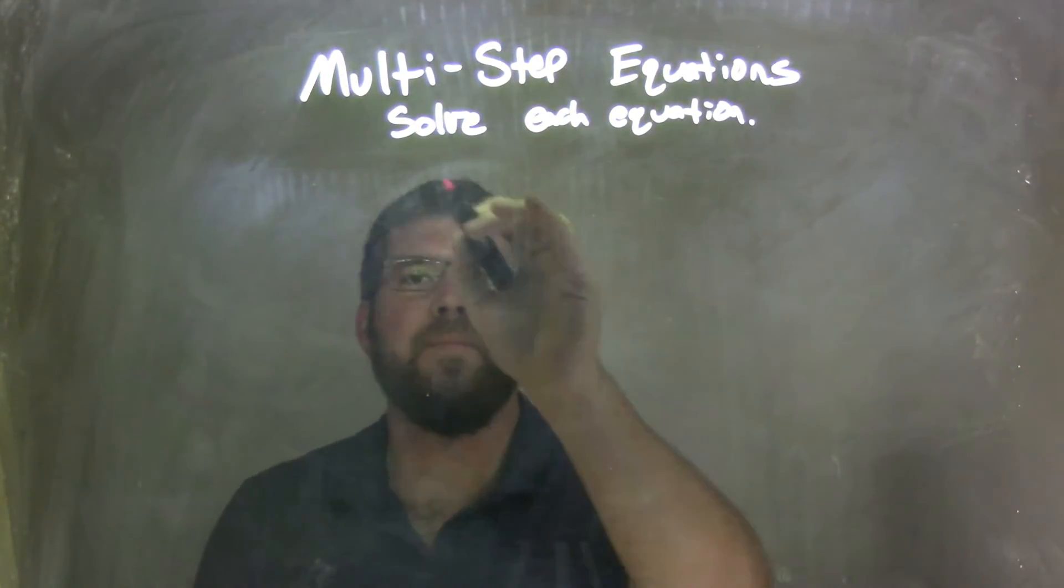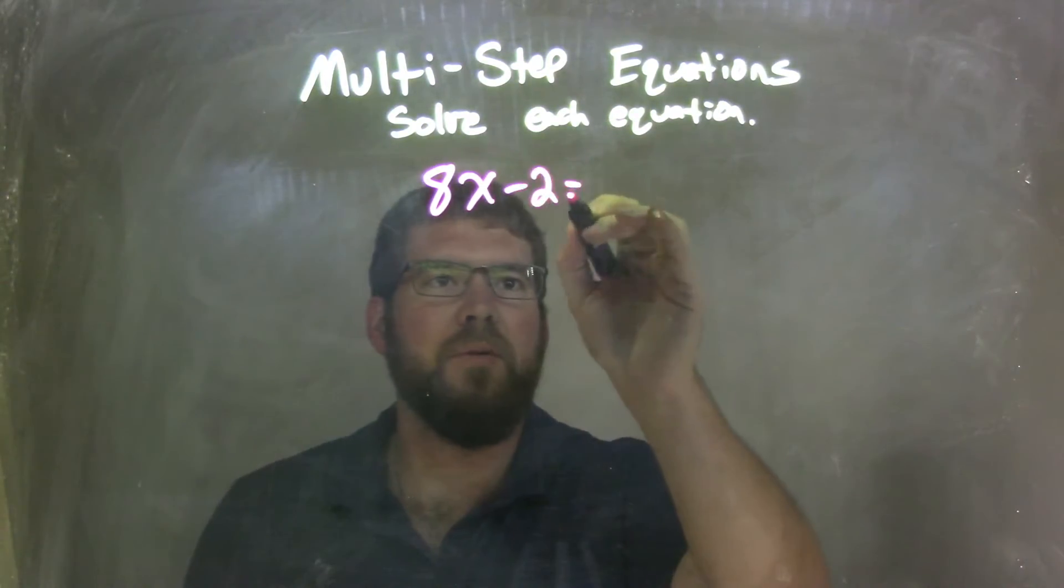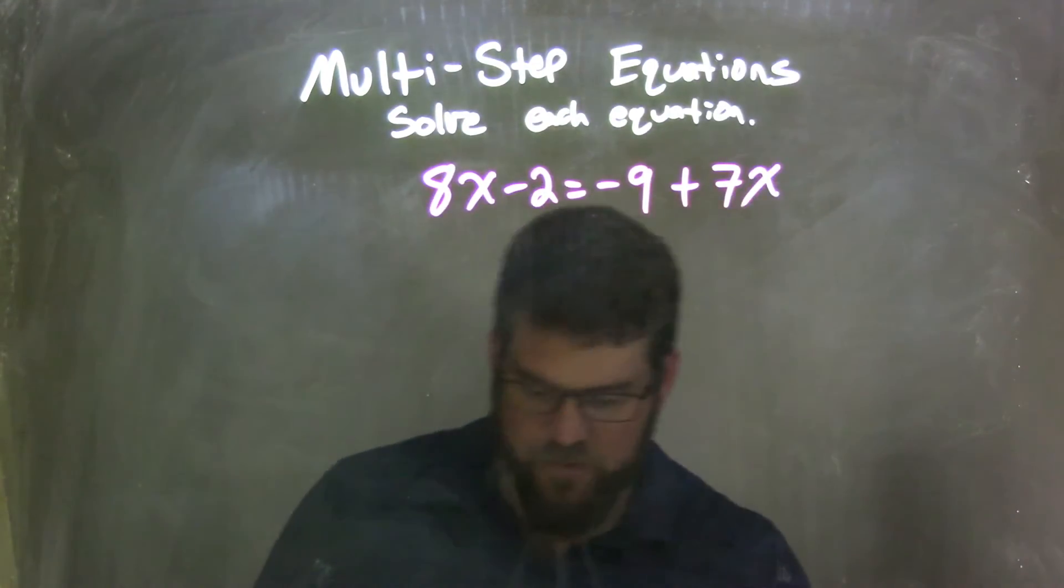If I was given this equation, 8x minus 2 equals negative 9 plus 7x, okay?